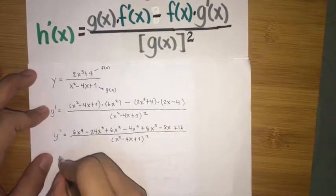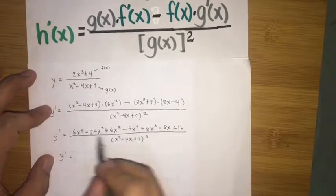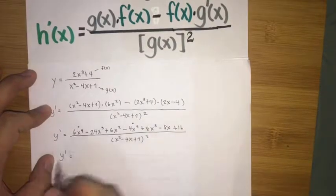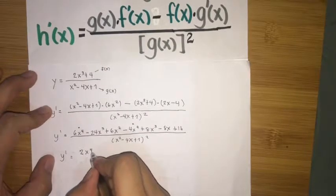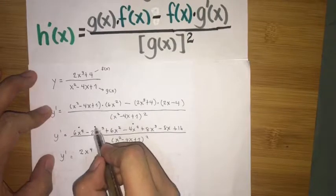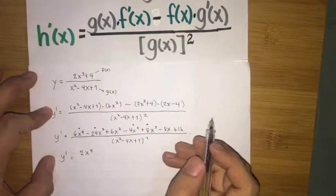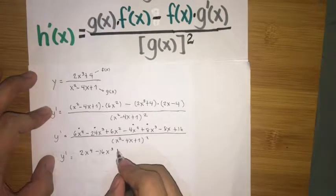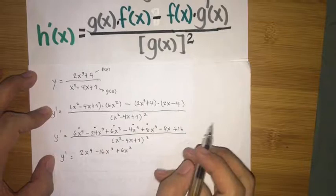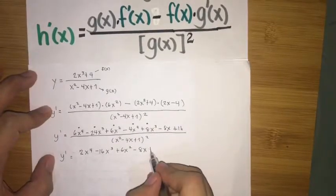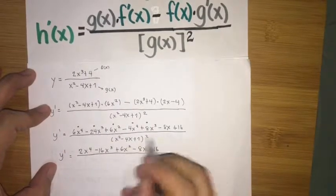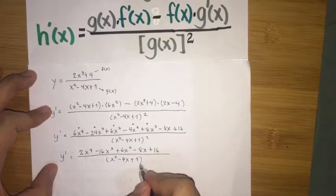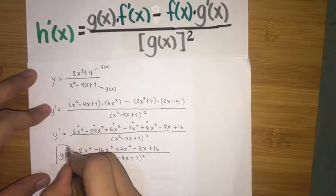Combining similar terms in the numerator: for x to the 4th, 6 minus 4 gives 2x to the 4th; for x cubed, negative 24 plus 8 gives negative 16x cubed; for x squared, we have 6x squared; for x, we have negative 8x; and for the constant, positive 16. So the final answer is 2x to the 4th minus 16x cubed plus 6x squared minus 8x plus 16, over x squared minus 4x plus 1 quantity squared.